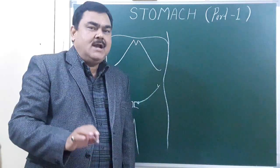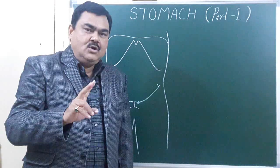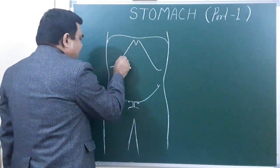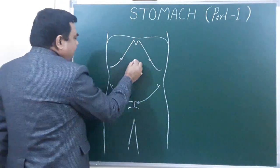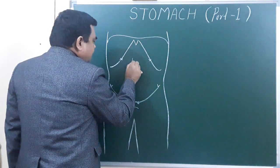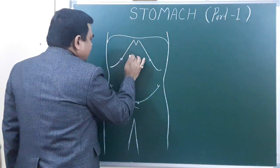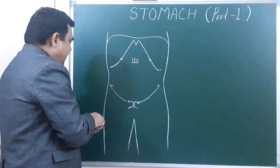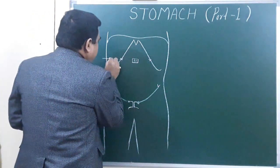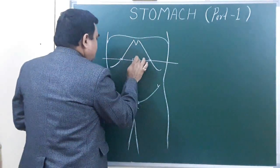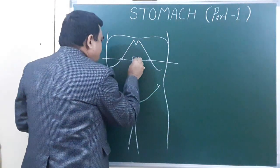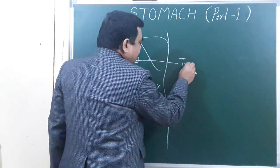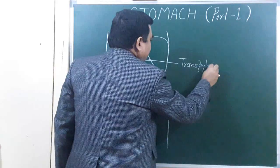The abdominal cavity is divided into nine regions by two vertical and two horizontal lines. The two horizontal lines are: one line passes at the level of the tip of the 9th costal cartilage. This line is the transpyloric plane, which passes through the lower part of L1 vertebra and here it crosses the tip of the 9th costal cartilage.